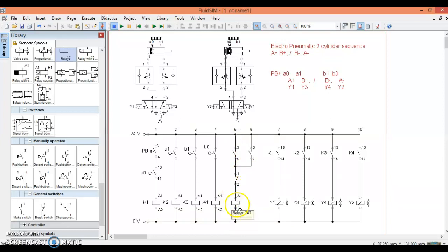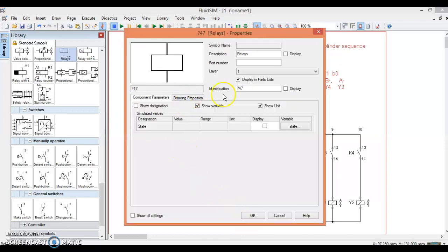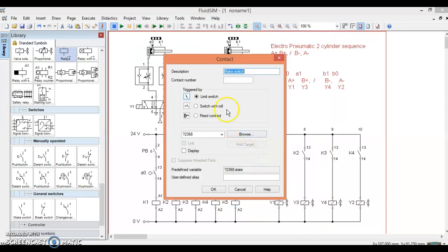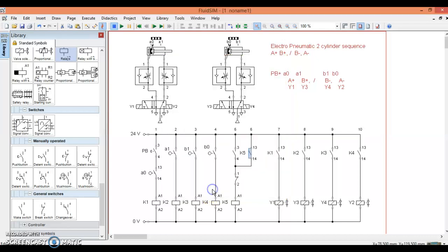So this is K5, relay 5, and we all know from previous discussions, this is a self-latching element here. So when relay K5 comes on, this contact closes, this will provide a current flow to the relay.